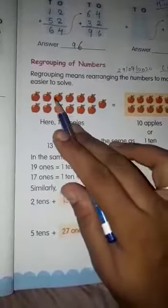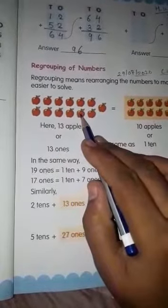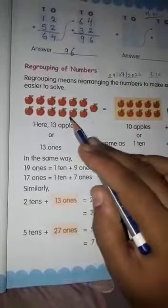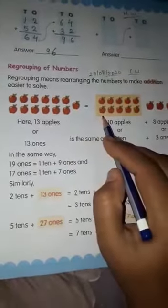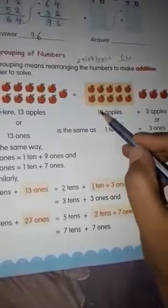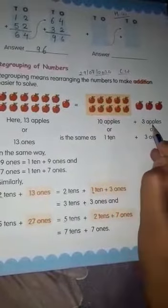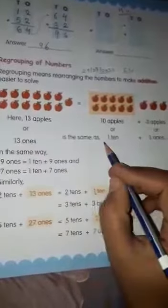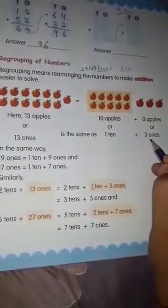Here is 13 apples. How many apples are there? 13 apples is equal to how can we rearrange? Look, 10 apples plus 3 apples. How can we write? 10 apples plus 3 apples.